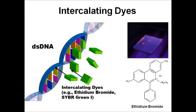Intercalating dyes have been around for quite some time. Dyes such as ethidium bromide and SYBR Green intercalate between the base pairs of double-stranded DNA, leading to fluorescence. You can see gel electrophoresis results with ethidium bromide glowing at DNA bands. However, just like absorption, both methods are not sequence-specific — they detect any double-stranded DNA rather than a specific gene or organism.